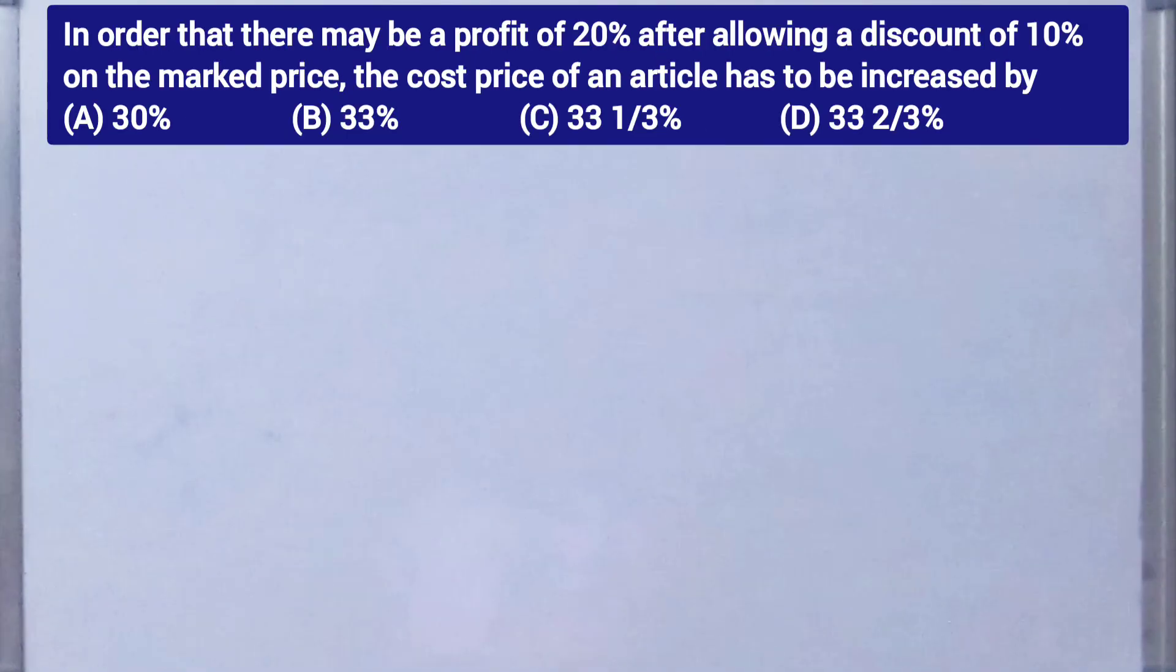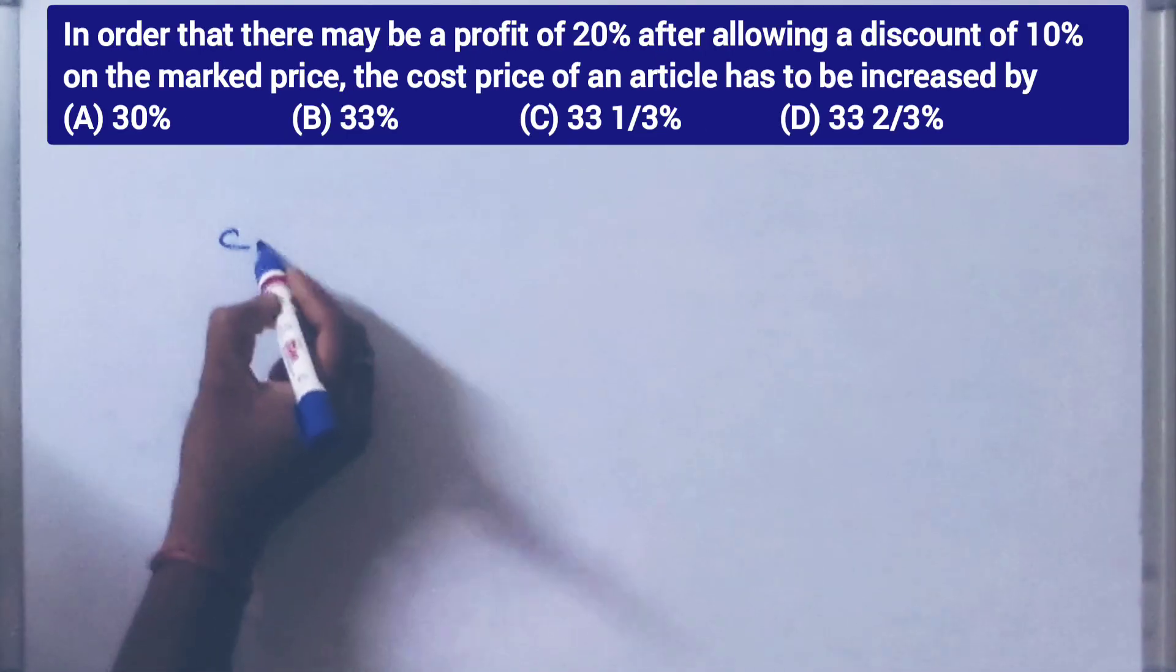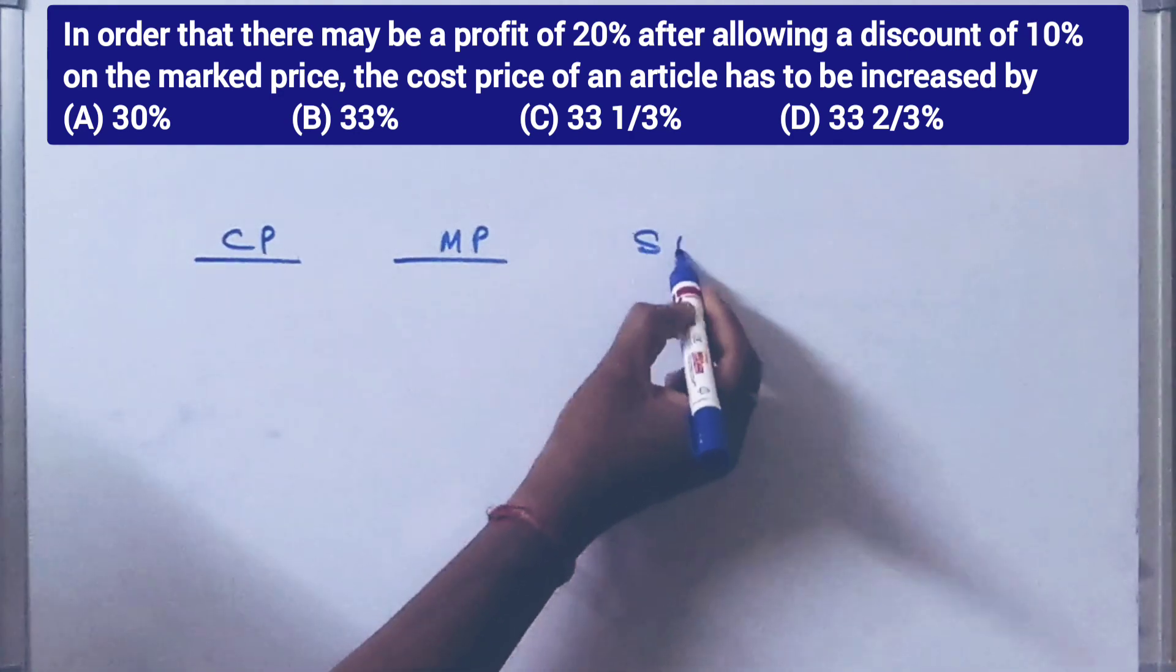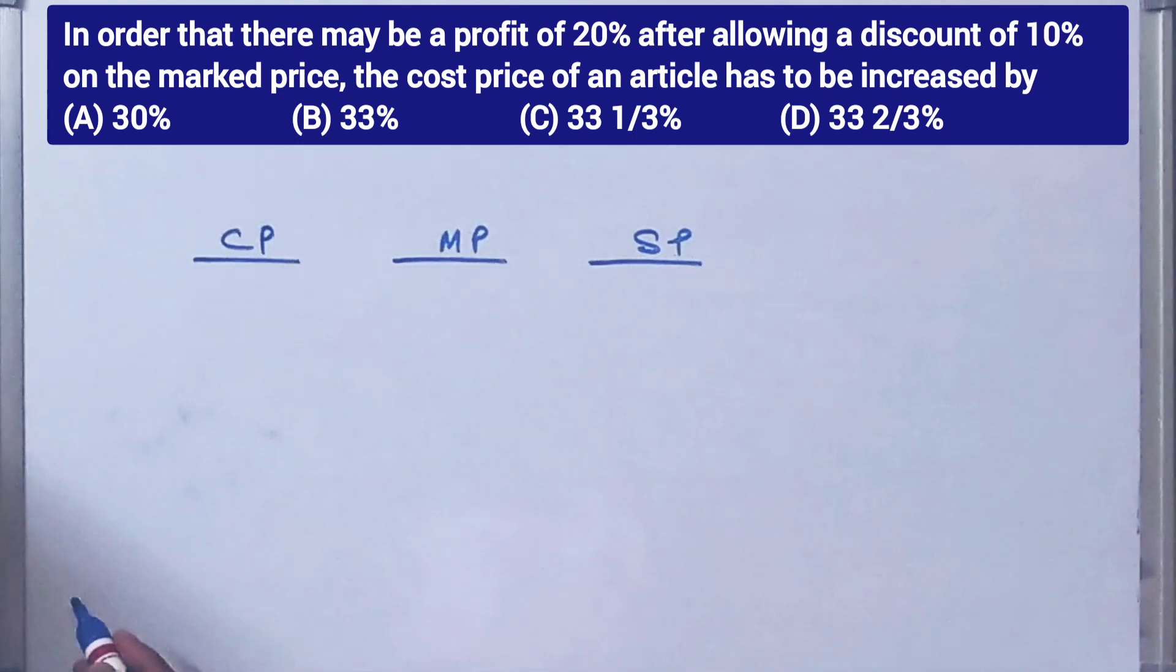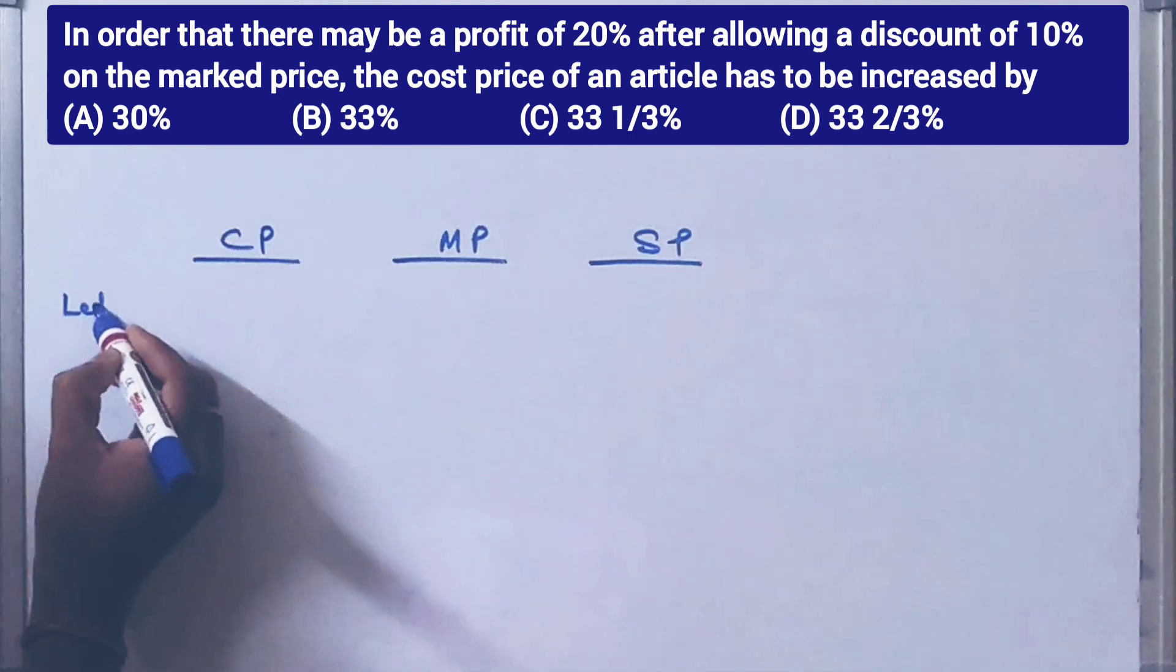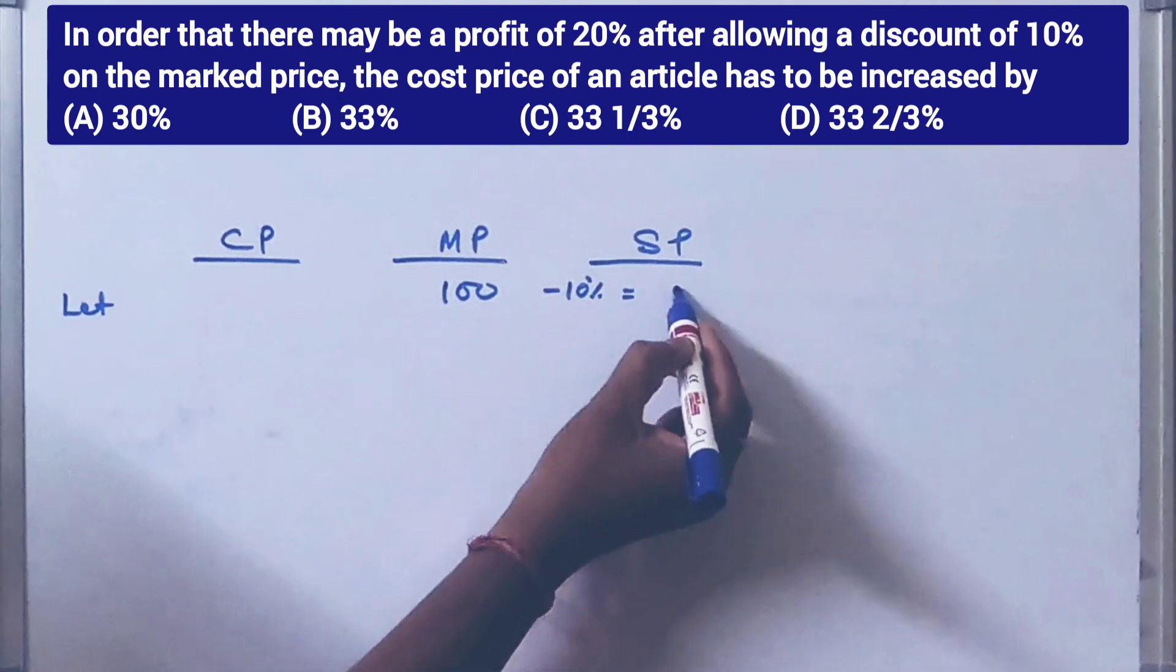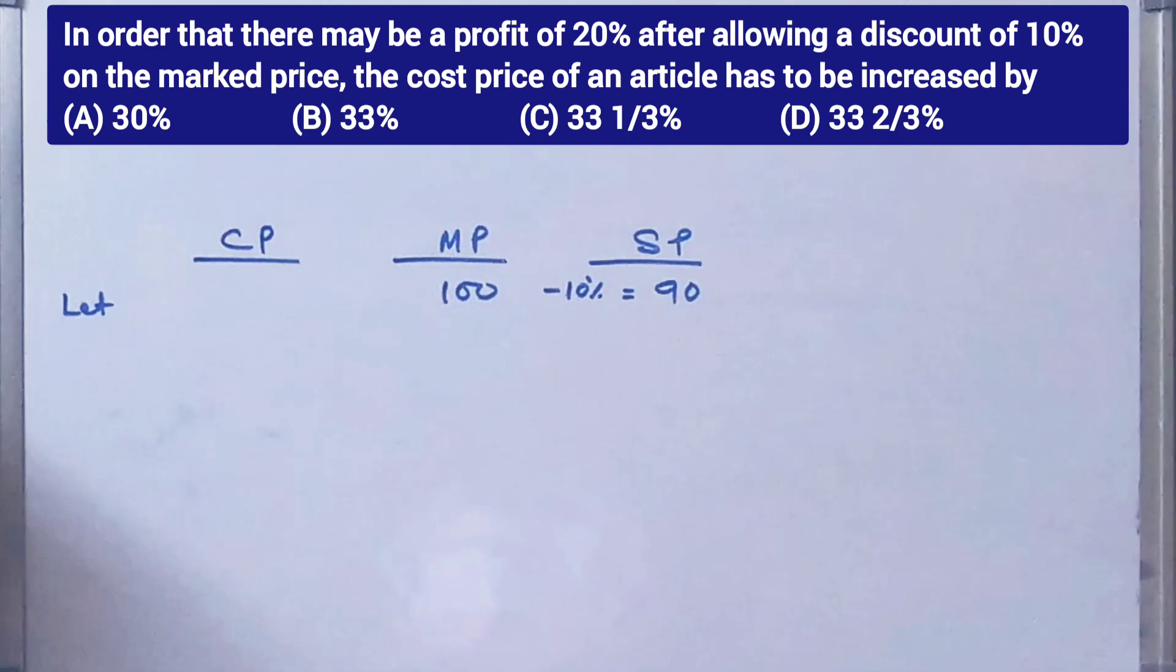So this is the cost price, then mark price, then this is the selling price. Let's call it mark price. Discount 10%, selling price is 90.